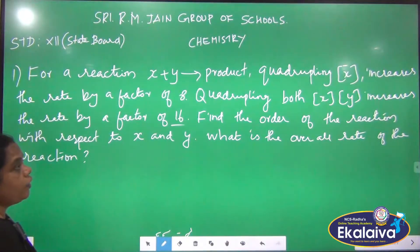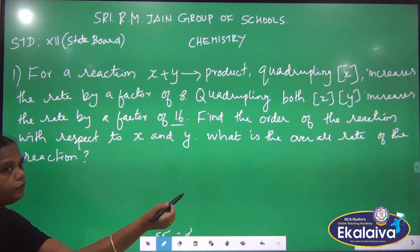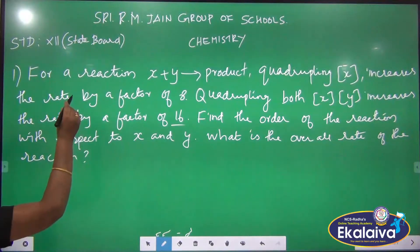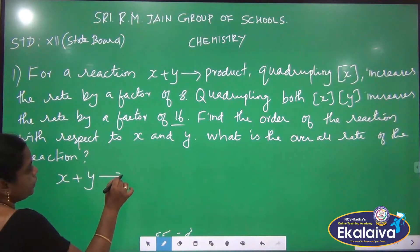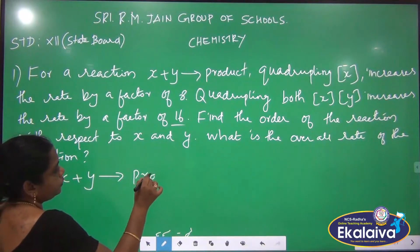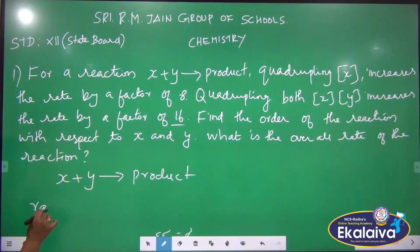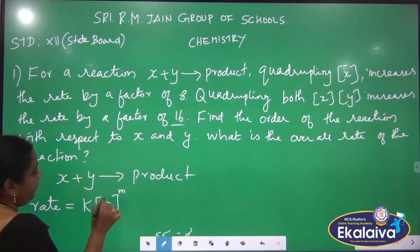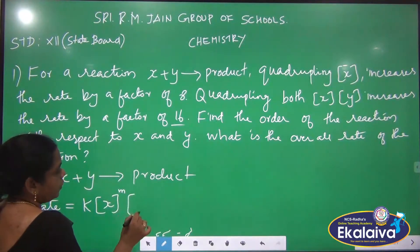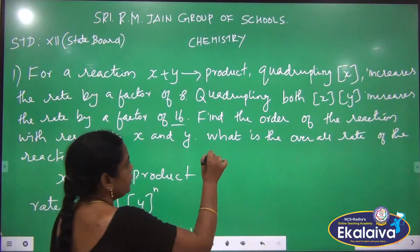First we are going to find out the order of the reaction with respect to X and Y, and then we are going to find the overall order. For the given reaction X plus Y gives the product, the rate expression is: rate equal to K into concentration of X to the power M and the concentration of Y to the power N.